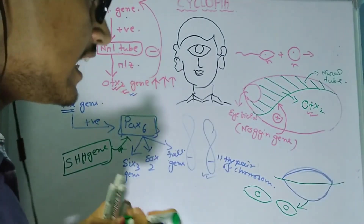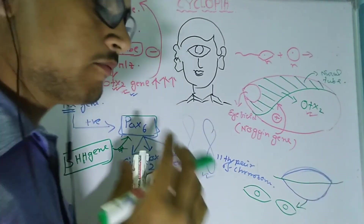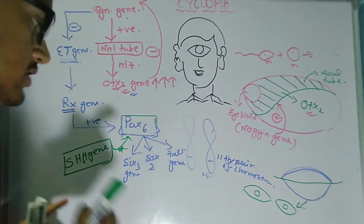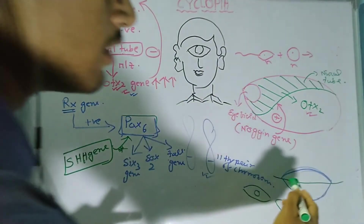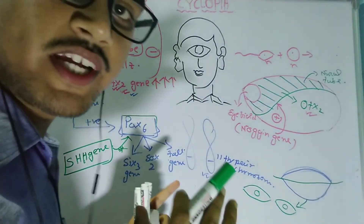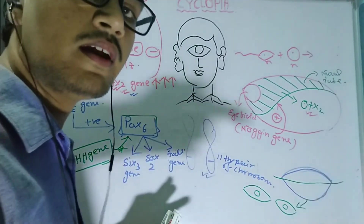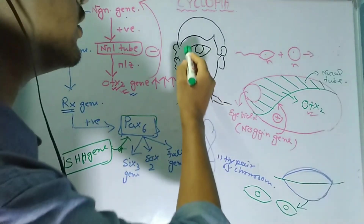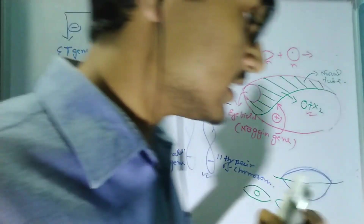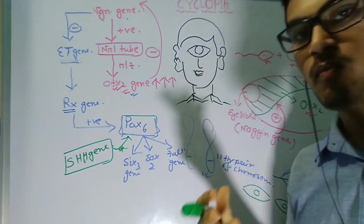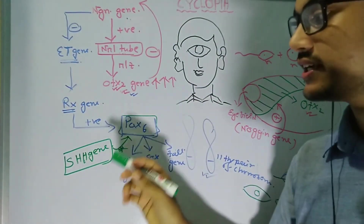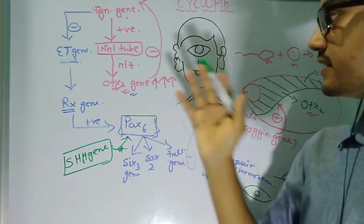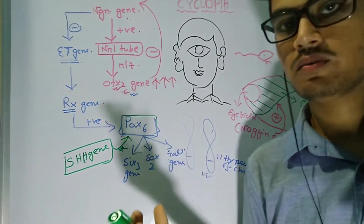In the case of cyclopia, all this mechanism runs normally and a single eye field is formed. However, the expression of the Sonic Hedgehog gene is absent. Due to the lack of Sonic Hedgehog gene expression, the single eye field does not divide into two eye fields. As a result, a baby is born with only a single eye field instead of two. This is the reason why a person is born with cyclopia — due to the lack of expression of the Sonic Hedgehog gene. Thank you very much for watching.